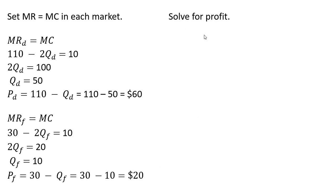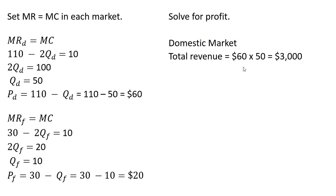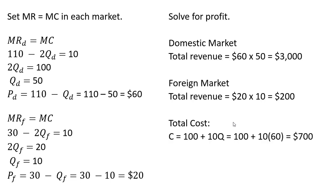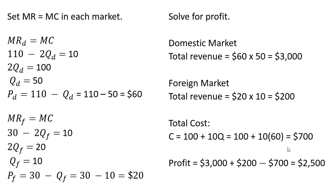Now let's solve for profit using this third-degree price discrimination strategy. In the domestic market, total revenue is 60 times 50, which is $3,000. In the foreign market, total revenue is 10 units at $20 each, which is $200. Total output is 50 plus 10 equals 60 units. Plugging 60 into the total cost equation gives 600 plus 100, so total cost is $700. Total profit is total revenue in both markets minus total cost, giving us $2,500.